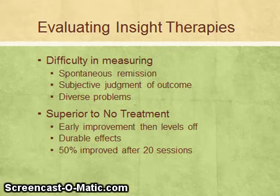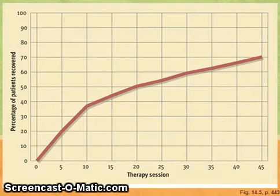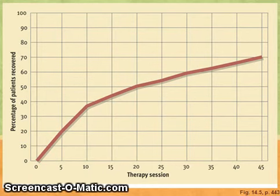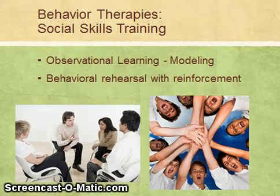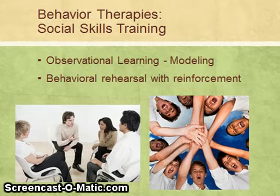Another form of behavioral therapy is social skills training, which uses observational learning and reinforcement from operant conditioning. This typically occurs in group therapy, but can also occur in individual therapy. A model demonstrates proper social skills — how to talk to people appropriately — and then within the session, the client practices these new skills and is reinforced when they do a good job. This therapy is frequently used with children, adolescents, and people with disorders such as ADHD that make socializing more difficult.